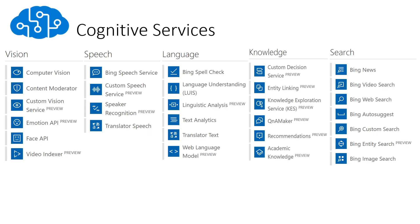The different cognitive services available that we can integrate in our Azure Search — whether directly, like computer vision or text analytics, or as a custom search, like Bing — are divided by these different categories: vision, speech, language, knowledge, and search.